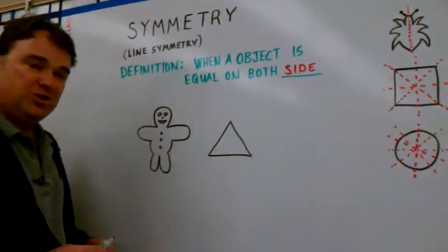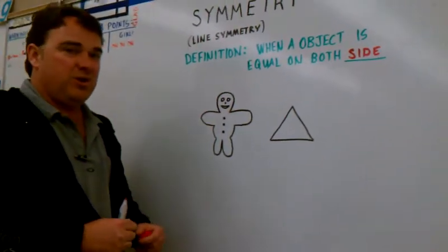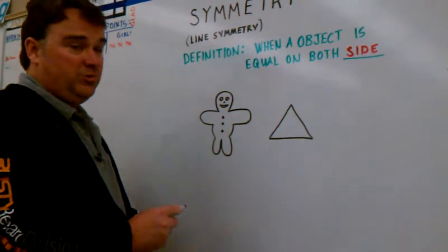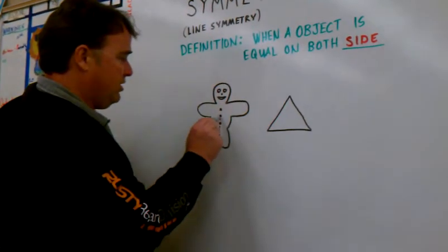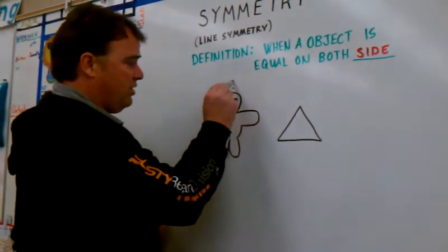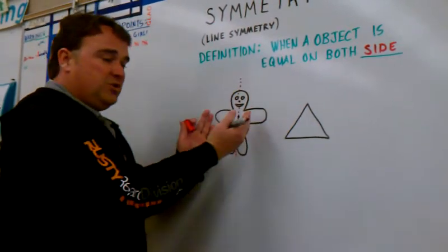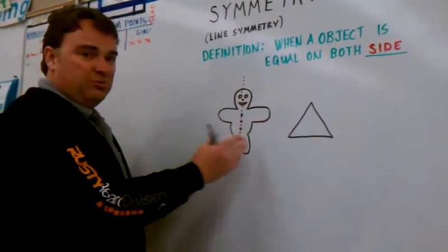Let's take an example of a gingerbread man. He's been running as fast as he can, but we caught up with him and we're going to cut him right down the middle. He's having surgery right now. Now, as you can see, you can fold him in half. He's going to be equal on both sides.